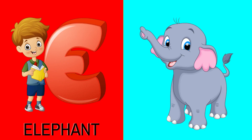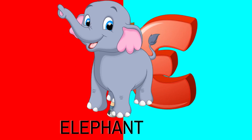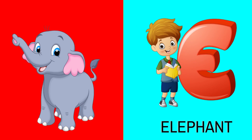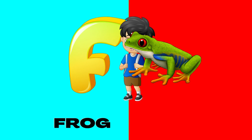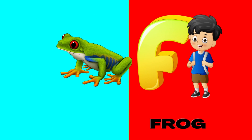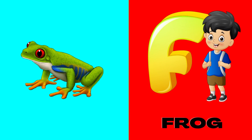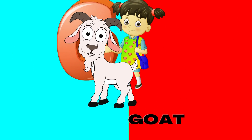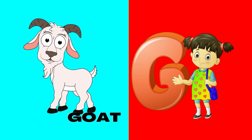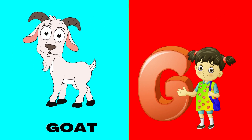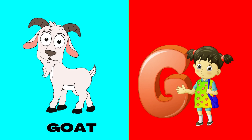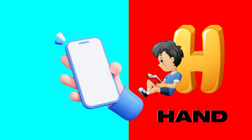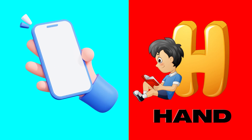E is for elephant, e-e-elephant. F is for frog, f-f-frog. G is for goat, g-g-goat. H is for hand, h-h-hand.